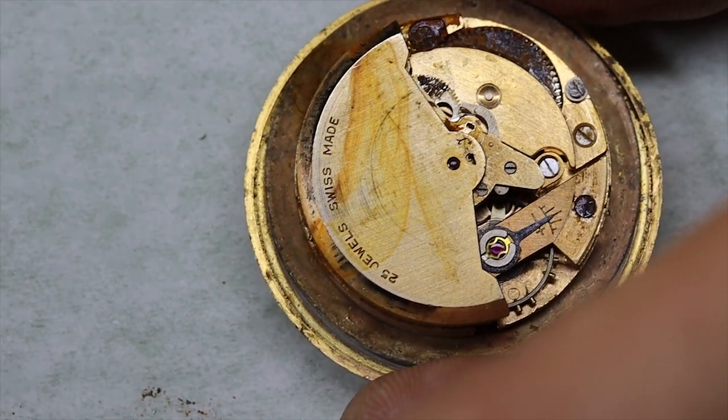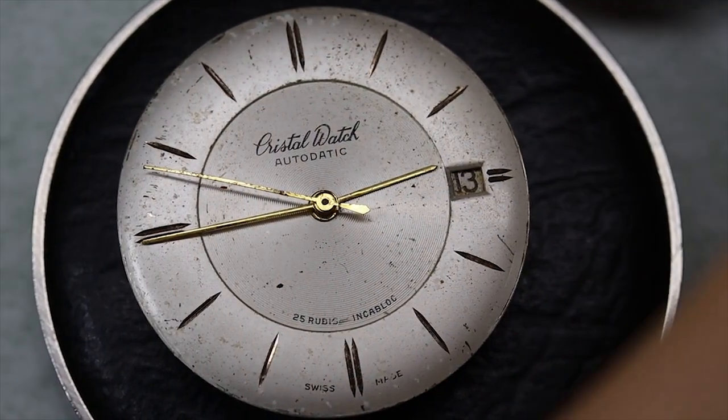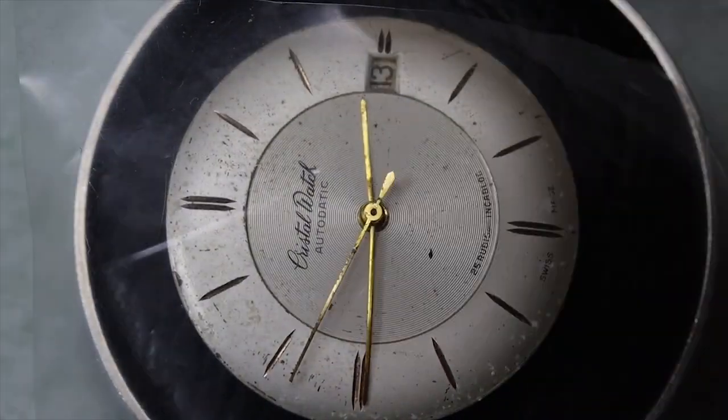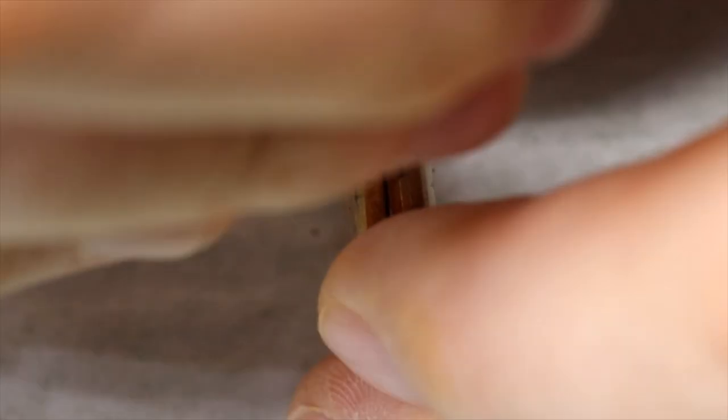So the movement has this pocket watch style eccentric case screws and the movement comes out of the front. We saw that the bezel actually comes off a little bit too easily. We're not going to worry about that too much right now, let's just get the dial off.